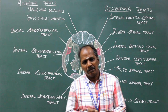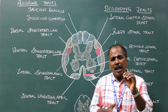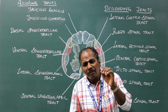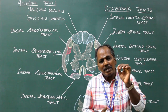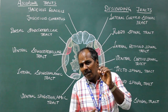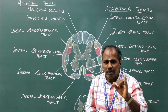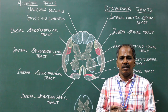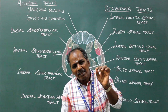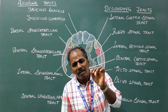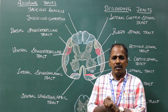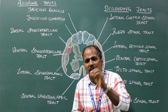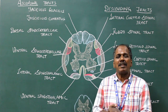Tracks are defined as a collection of nerve fibers within the central nervous system which have the same origin, course and termination. Or a collection of nerve fibers which connects two masses of grey matter within the central nervous system constitutes a tract.